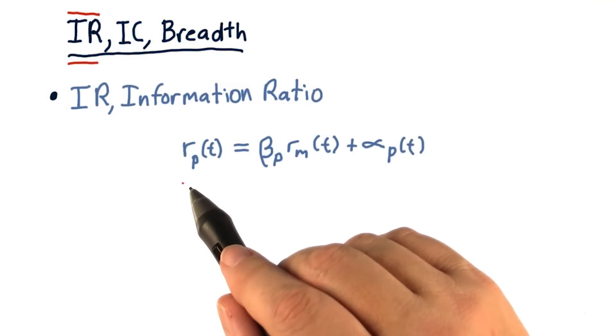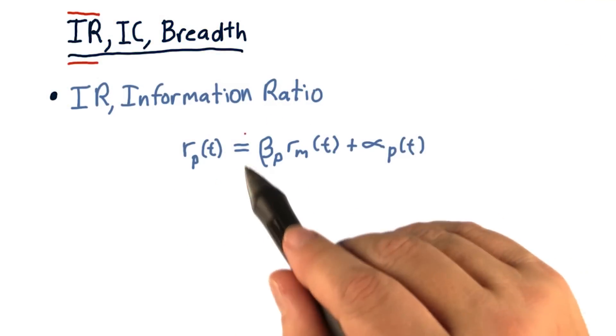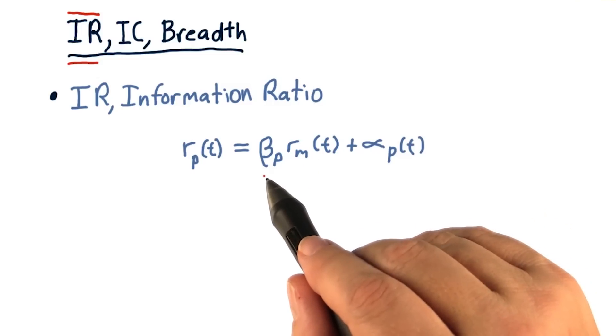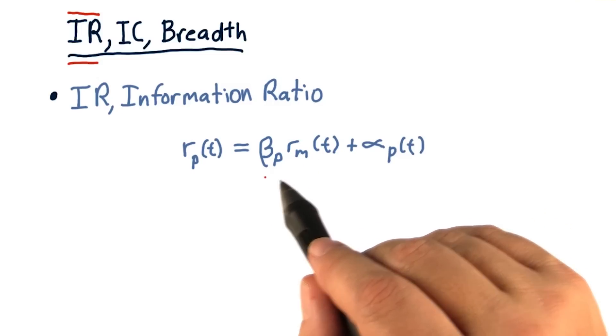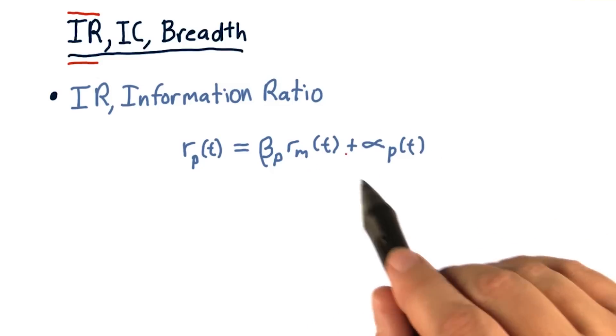So recall, the return on our portfolio for a particular day is equal to the market component of the return, which is beta for that portfolio, times the return on the market for that day, plus this residual return.